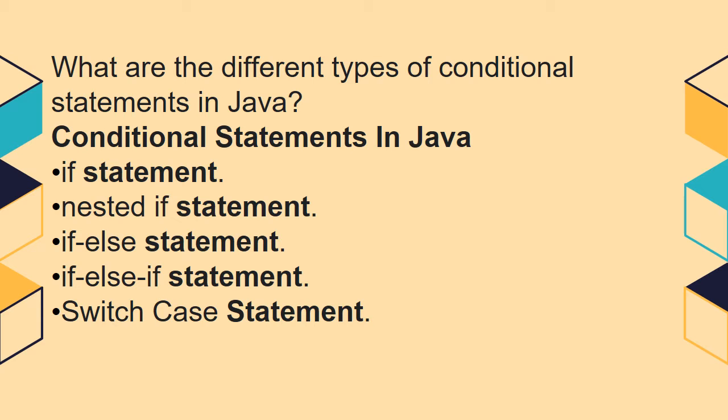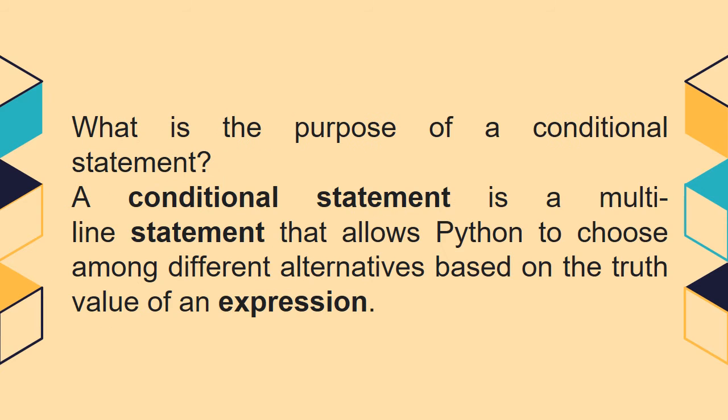These are the five types of conditional statements in Java. What is the purpose of a conditional statement? A conditional statement is a multi-line statement that allows Python to choose among different alternatives based on the truth value of an expression. This is the purpose of a conditional statement.